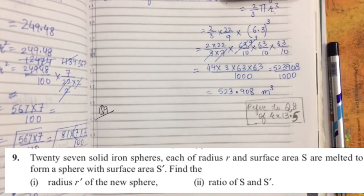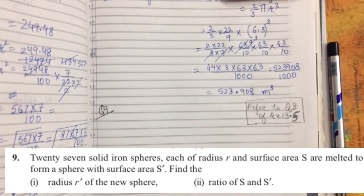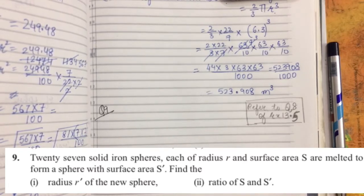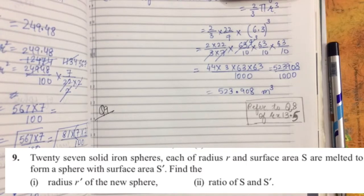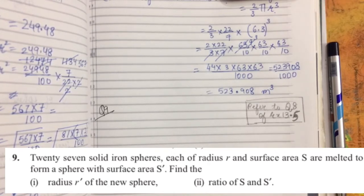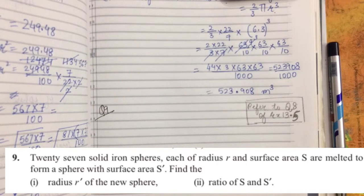Here 27 solid spheres are combined to form one new sphere, so combined volume of 27 spheres equals volume of new sphere. Note that numerical values are not given — only variables r and R'. Surface area of original spheres is S and of the new sphere is S'.